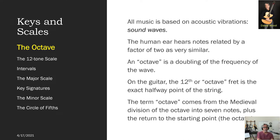The term octave refers to eight notes — this is the way music was considered in Western Europe until the invention of the 12-tone scale in the late 1700s and early 1800s. On the guitar, there's a 12th fret. When you pass through the 12 notes of the chromatic scale, you get to the 12th fret, which is exactly halfway the entire length of the string. So an octave really means a doubling — or inversely, a halving — of the current frequency. The thing that makes music work is that when you do that, your ear hears it as very, very similar.